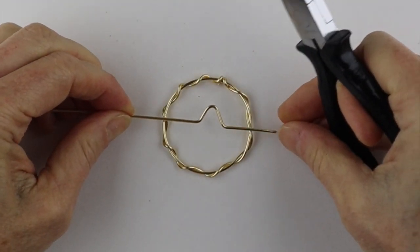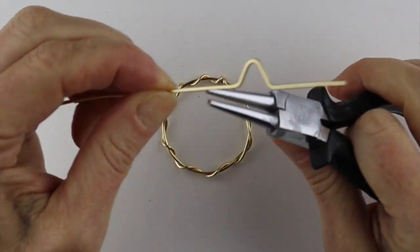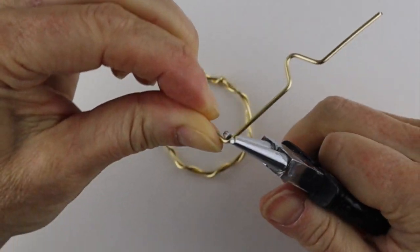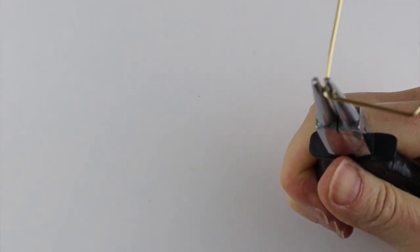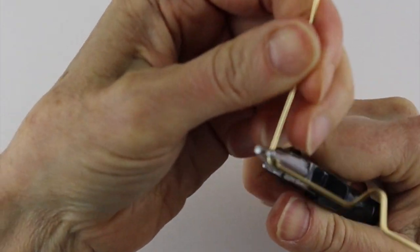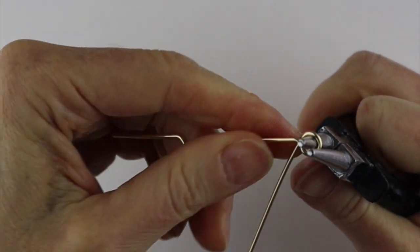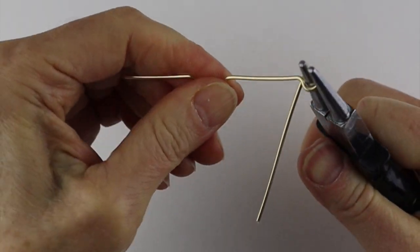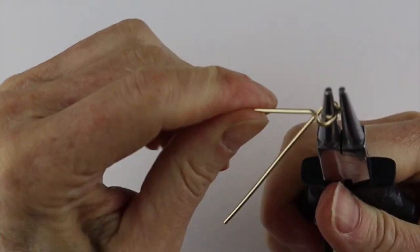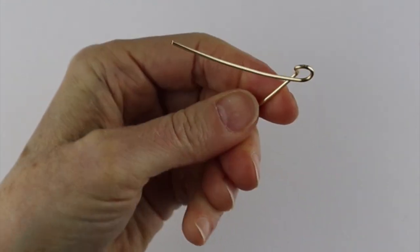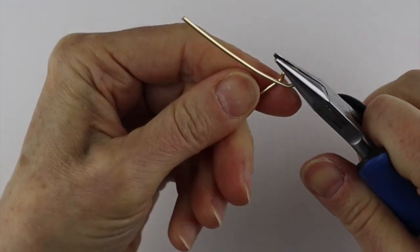Center that, and then here we're just going to do a little loop. What we could do is maybe do it perpendicular so it's sticking out a little bit - it might make it easier for the beads to actually dangle.